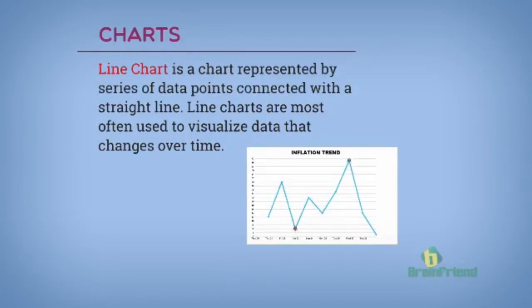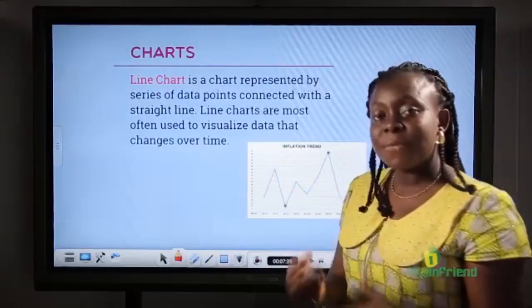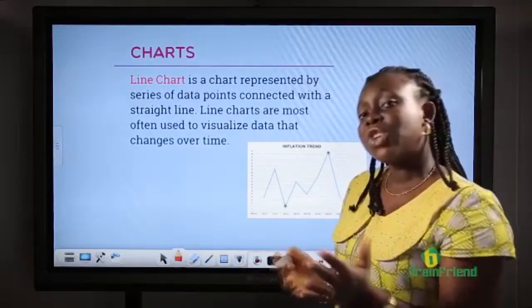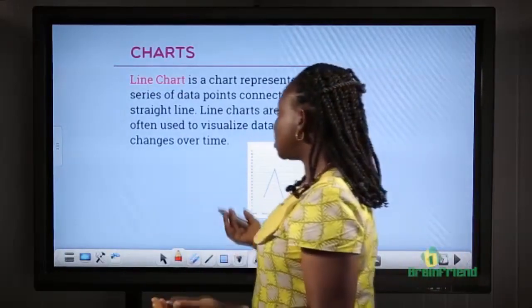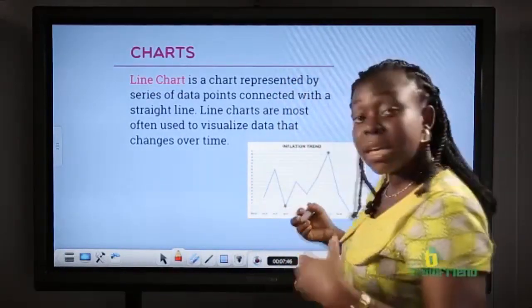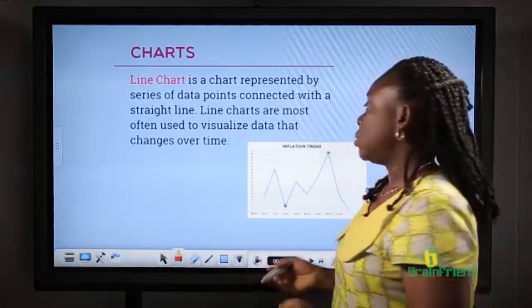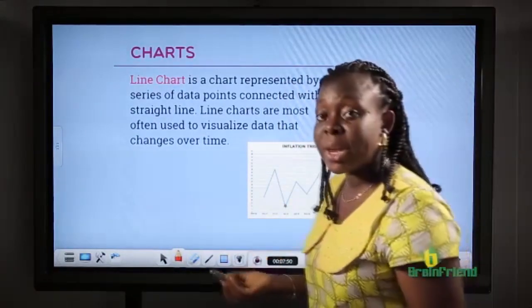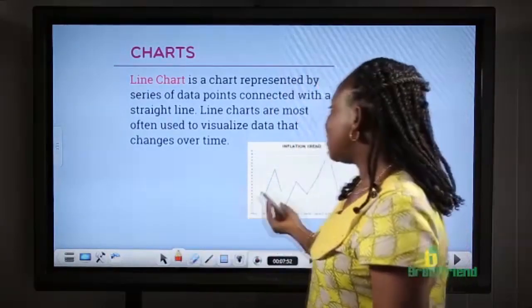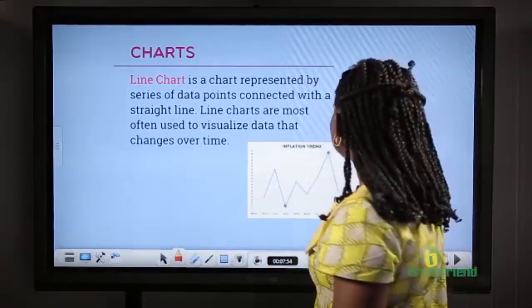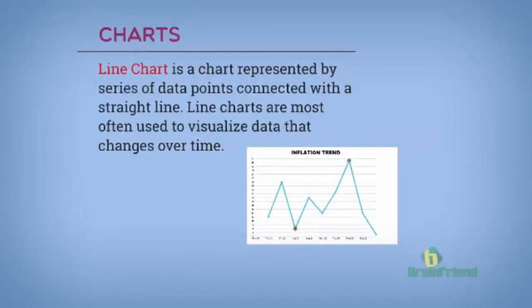The next chart is line chart. Line chart is used basically for activities that change over time. Such activities could be like inflation. It could be interest rates. Any activity that change over time is best represented using a line chart.